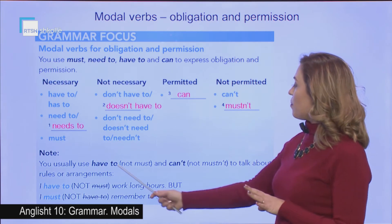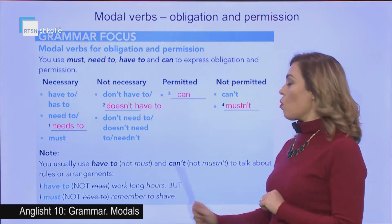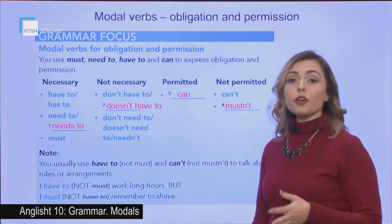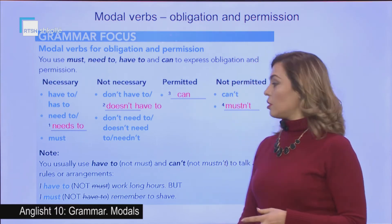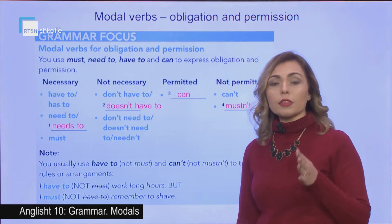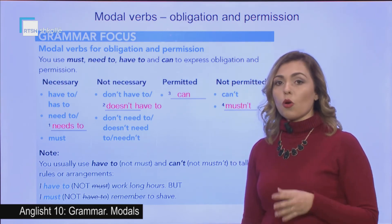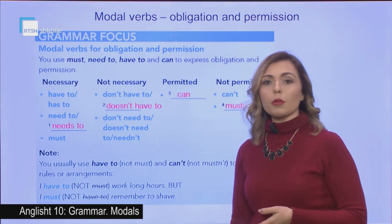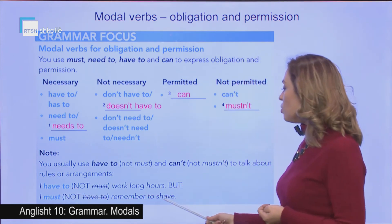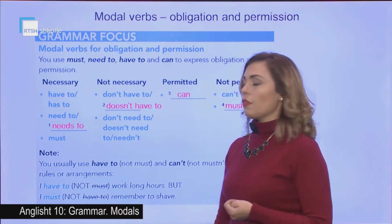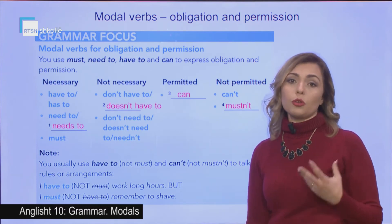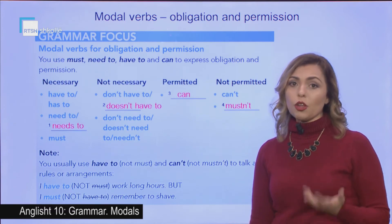Focus on the difference between have to and must, or can't and mustn't. Have to and can't refer to rules and regulations — for example, 'I have to work long hours' because those are the specific hours I am obliged to work, or 'I have to be at school from 8 to 1 o'clock — this is the rule.' Whereas, 'I must remember to shave' shows an inner obligation — something you feel you must do, not an external rule.